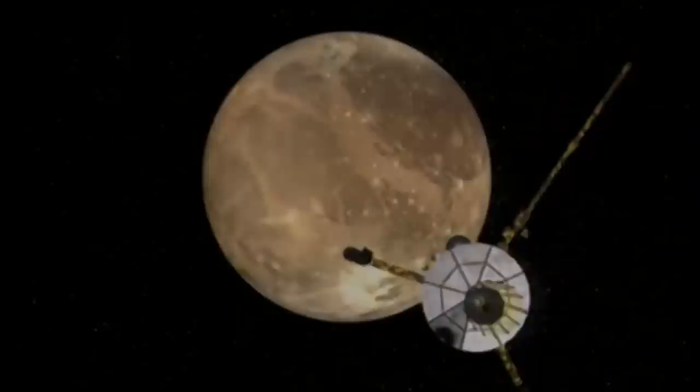Contrairement à Io, ce satellite, Ganymède, est très calme. À moins 150 degrés, la croûte de glace s'étend sur 100 km d'épaisseur.